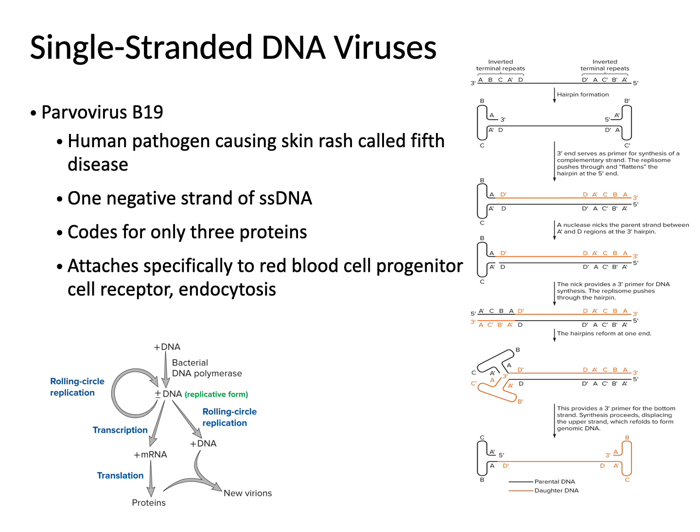With single-stranded DNA viruses, the virus is missing its complement strand that we would normally find. It uses DNA polymerase to make a copy of the complement strand, and with that double-stranded DNA, we can then make RNA to produce proteins. At the same time, that template is used to make the genome — single-stranded DNA. An example is parvovirus B19, which causes fifth disease in humans, characterized by a skin rash. Its genome codes for only three proteins.